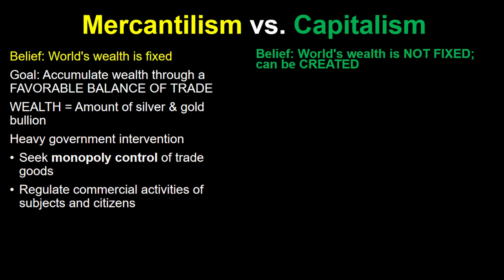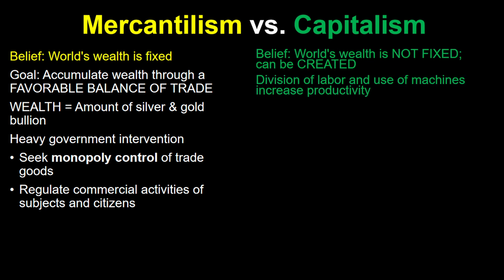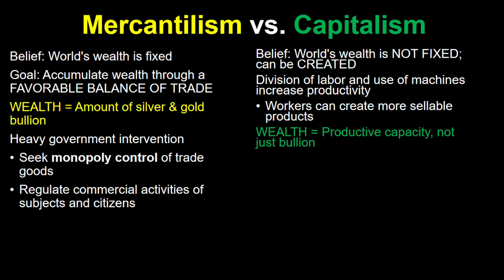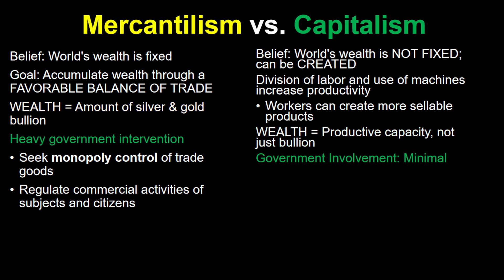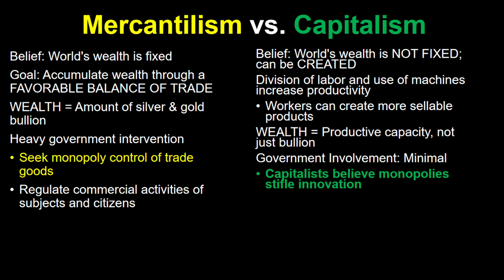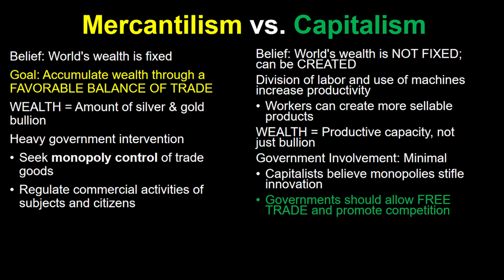In capitalism, however, the amount of wealth in the world is not fixed — wealth could be created. Adam Smith had observed the early days of industrialization in Britain and seen how the division of labor and the use of machines meant that workers could be much more productive in creating products that could be sold. The true wealth of a nation was not just its bullion, but also its productive capacity. Capitalism also advocated much less involvement from the government, with capitalists believing that monopolies stifle innovation. Instead, government should allow free trade and competition.